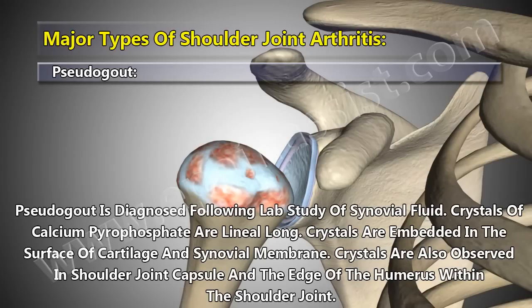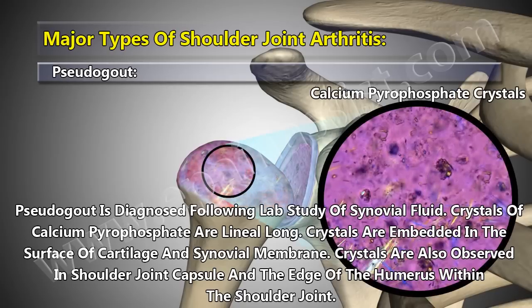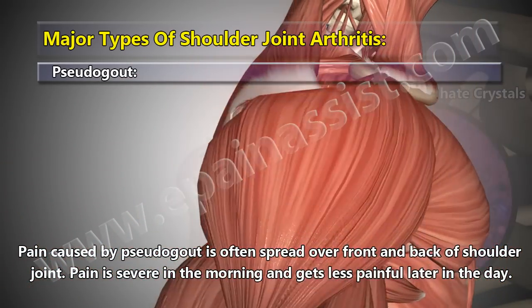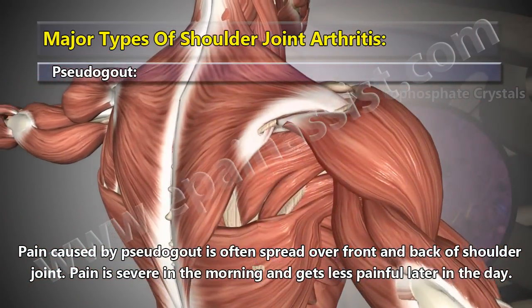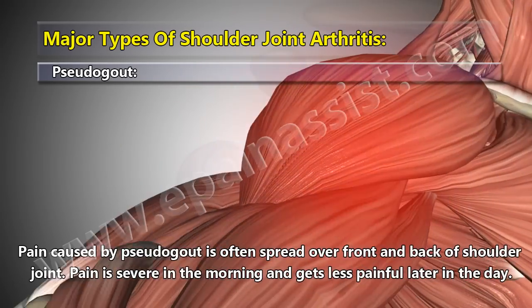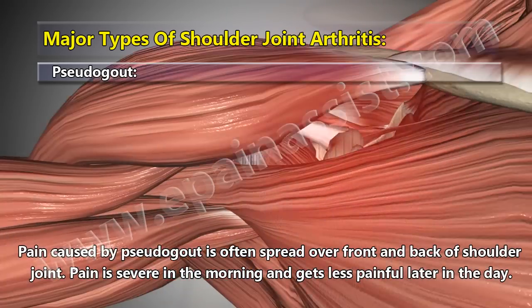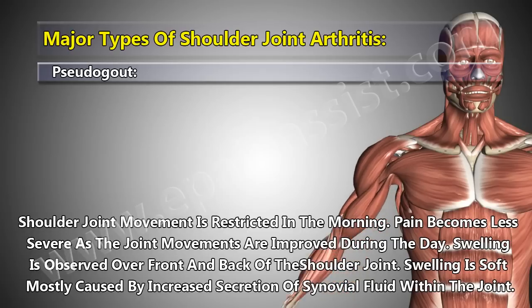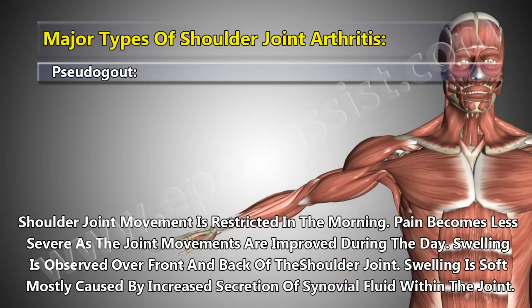Pseudogout is diagnosed following lab study of synovial fluid. Crystals of calcium pyrophosphate are linear and elongated, embedded in the surface of cartilage and synovial membrane, and also observed in the shoulder joint capsule and at the edge of the humerus. Pain caused by pseudogout is often spread over the front and back of the shoulder joint, and is severe in the morning, becoming less painful later in the day. Shoulder joint movement is restricted in the morning and improves during the day.